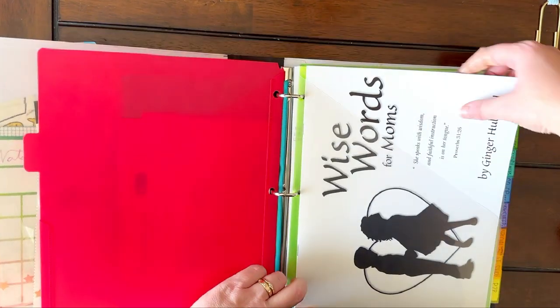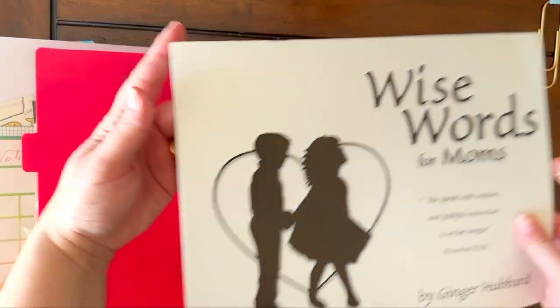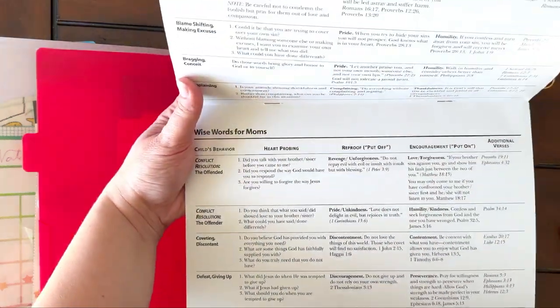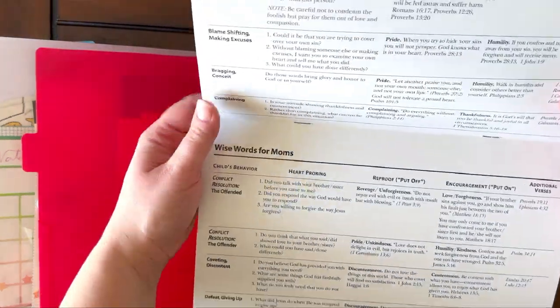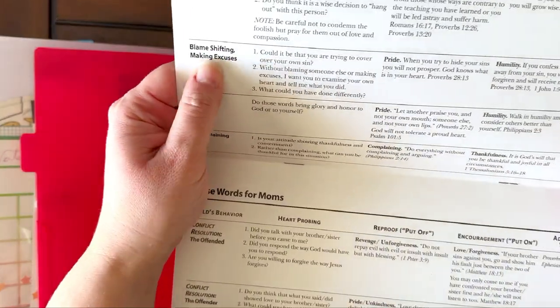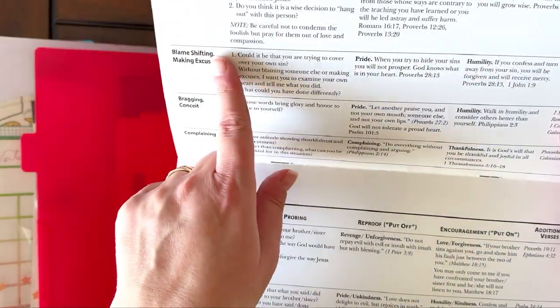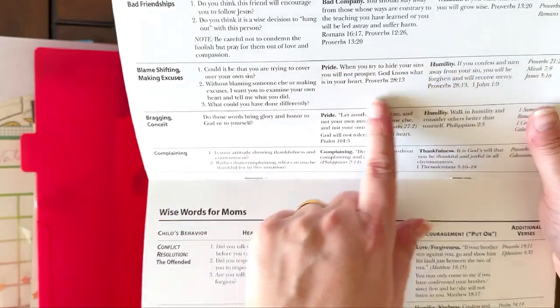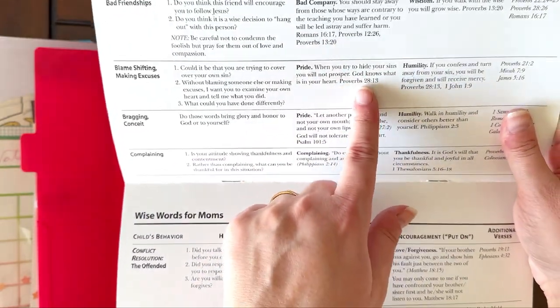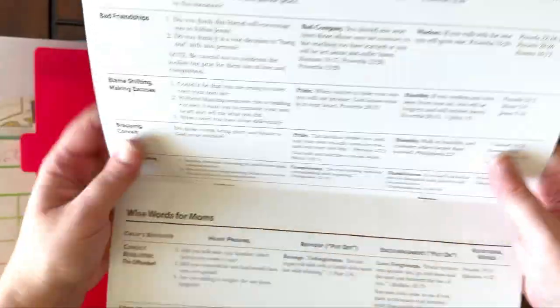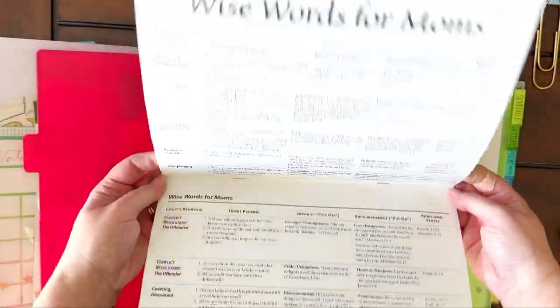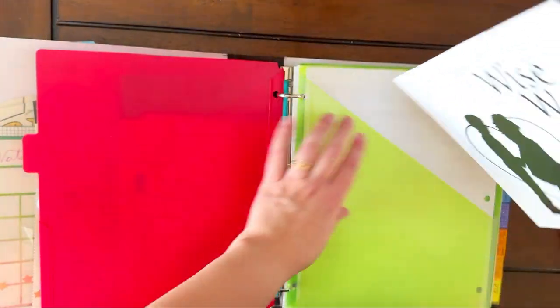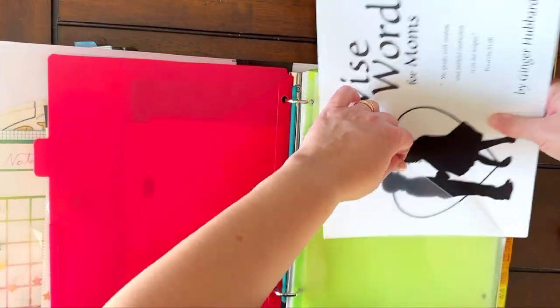This is a really cool resource that I got at a homeschool conference from Ginger Hubbard about conflict with your children and how you could address it with them. So like if my children are blame shifting or making excuses, here is questions that I could ask them. Here's the sin that we're dealing with pride, and here's some scriptures that I could go over with them. So this is super handy if I'm dealing with difficult behavior, which could be a daily basis, right? So it's right here in my daily binder.